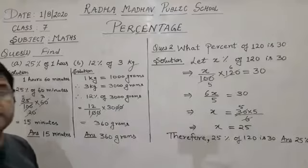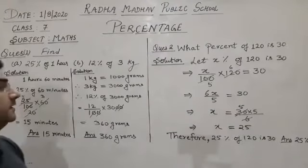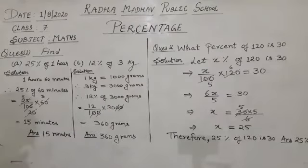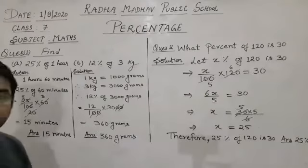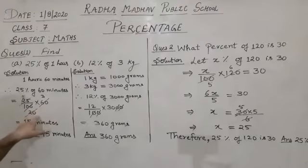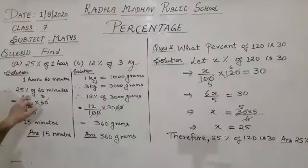Question one: find 25% of one hour. We know that one hour is equal to 60 minutes, so we will find 25% of 60 minutes. 25% of 60 minutes is equal to — removing the percent sign and dividing by 100 — 25 upon 100 into 60. We know that 25 and 100 are both divisible by 5: 5 fives are 25, and 5 twenties are 100.